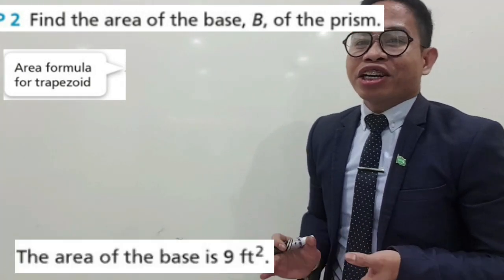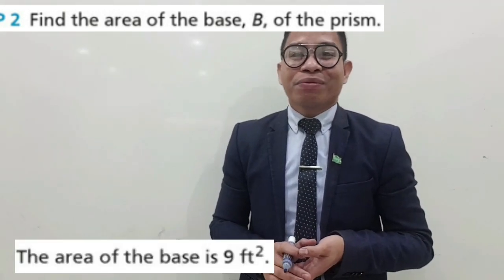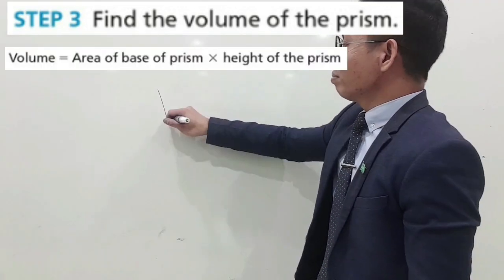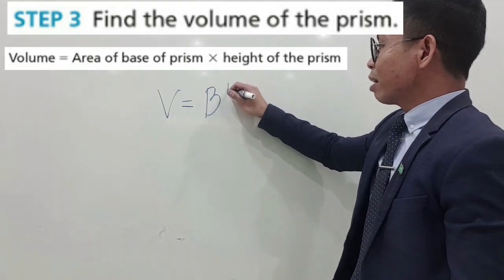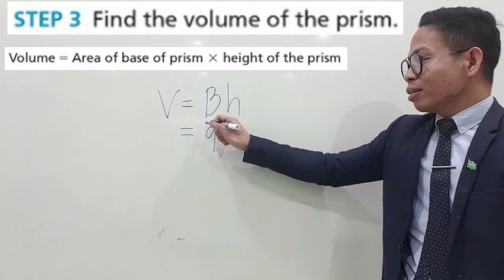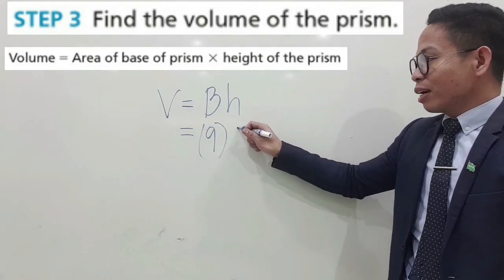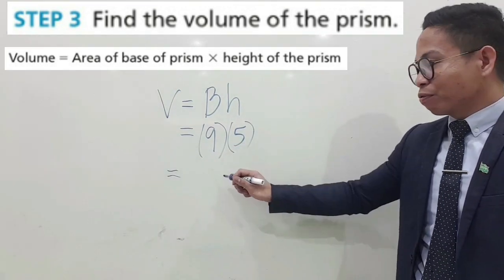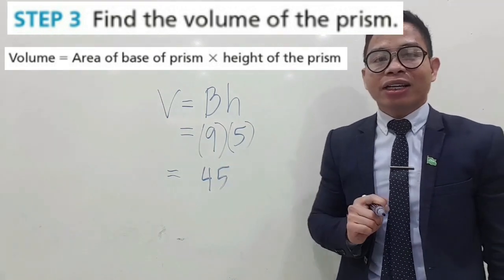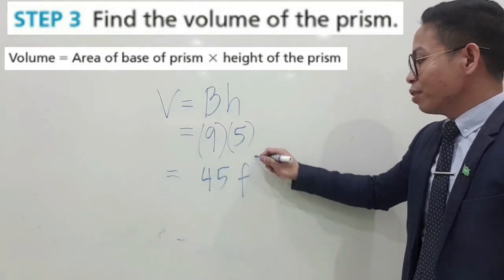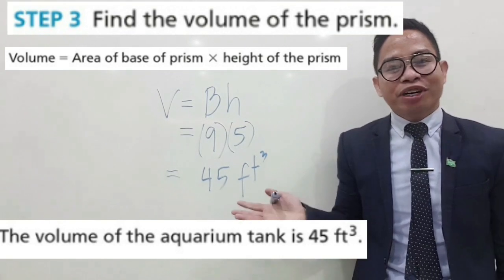So we have now the area of the base, which is 9 square feet. So we can now move on to step 3. And that is finding the volume of a trapezoidal prism. Volume is equal to the area of the base times the height of the prism. The area of the base is 9 square feet and the height of the prism is 5 feet. We will multiply 9 and 5, and this is equal to 45. We should not forget to write the unit of measurement in cubic feet. So we have 45 cubic feet.